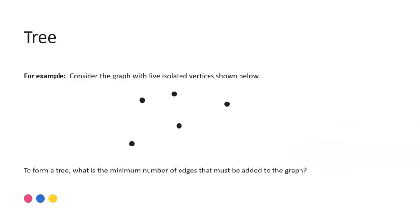A really common exam question is something simple like this, just testing your definitions. Consider the graph with five isolated vertices shown below. To form a tree, what is the minimum number of edges that must be added? As we said, it's always one less. So therefore, it should be four edges, given that we are starting with five vertices.